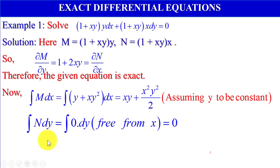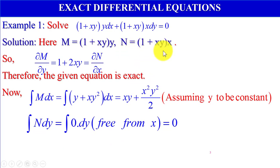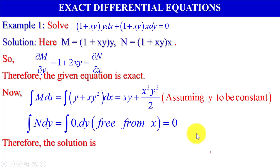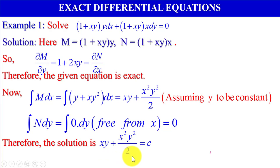Similarly, we integrate N with respect to dy for those terms free from x. Here N equals x plus x squared y, which has no term free from x. Therefore, integration of N dy equals integration of 0 dy, which gives 0. Therefore, the solution is xy plus x squared y squared by 2 equals c.